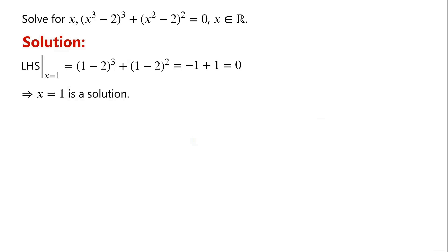So we will check whether there are other solutions first. The left-hand side of the equation has two terms: x cubed minus 2, all cubed, and x squared minus 2, all squared.